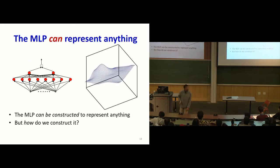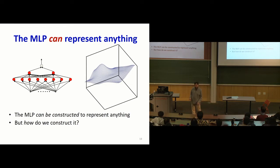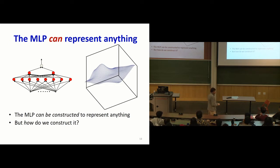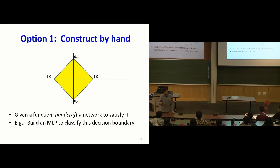The MLP can represent anything — but the question is, how do you actually construct this network? Even assuming the network has the appropriate neurons connected in the appropriate manner, how do you set the weights and biases to make it compute the function you want? One simple option is to just handcraft the network, as we saw in the last class.